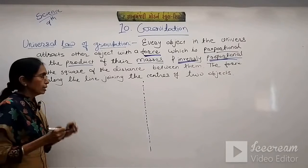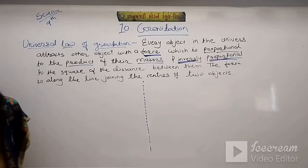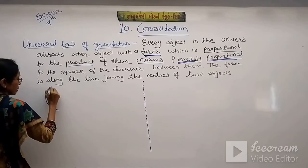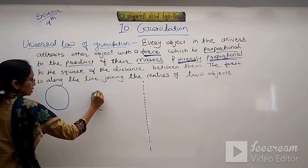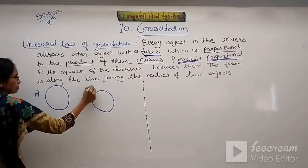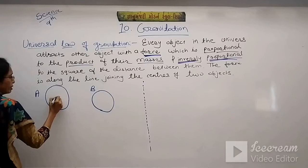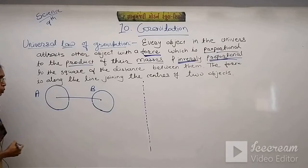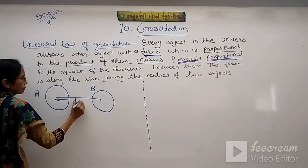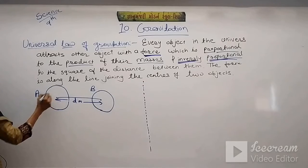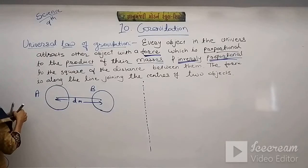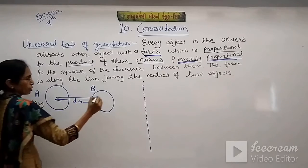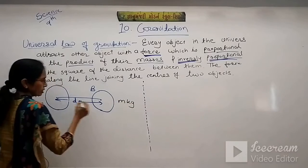Now we will derive the formula. Suppose there are two objects — Object A and Object B. The figure is given in your book. Objects are not always spherical in shape, but here we are taking them as spherical. These are the centers, and this is the distance between the two centers. Suppose the distance is D meters, the mass of Object A is capital M kg, and the mass of Object B is small m kg.